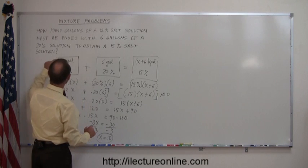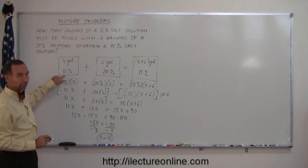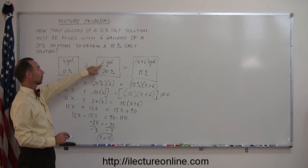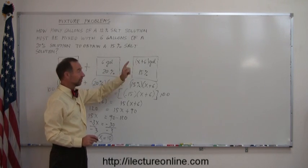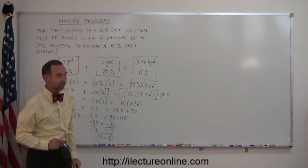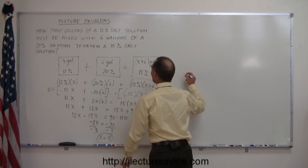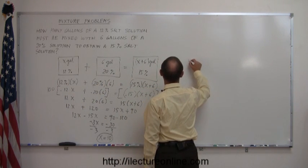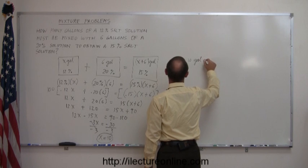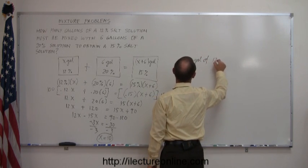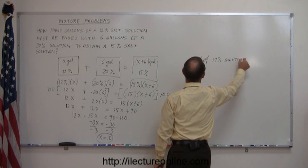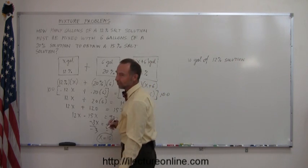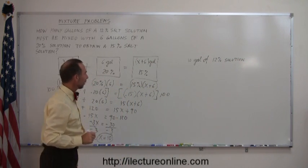So the answer here is that you will need 10 gallons of a 12% solution to be mixed with 6 gallons of a 20% solution to end up with, well, 10 plus 6, 16 gallons of a 15% solution. So the answer is you need 10 gallons of the 12% solution to end up with a 16 gallon solution of 15% salt.